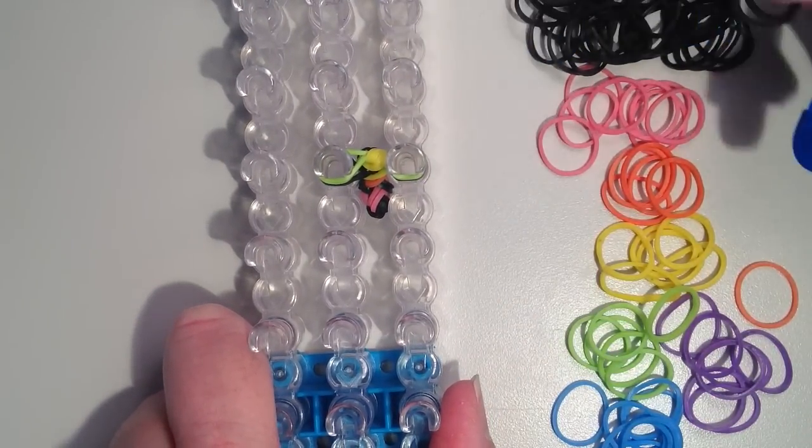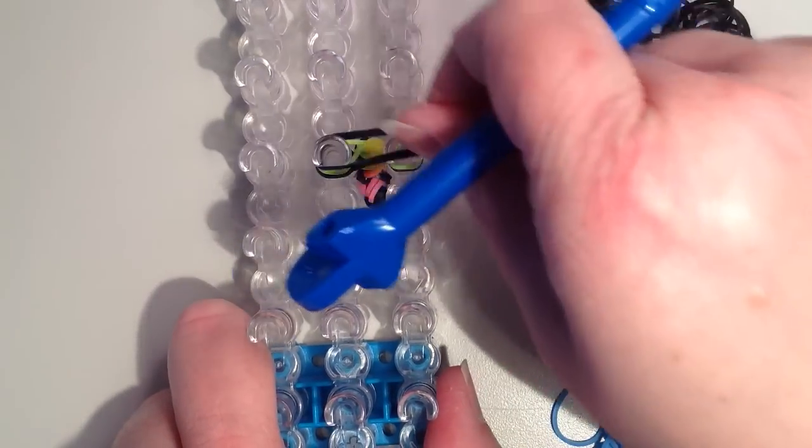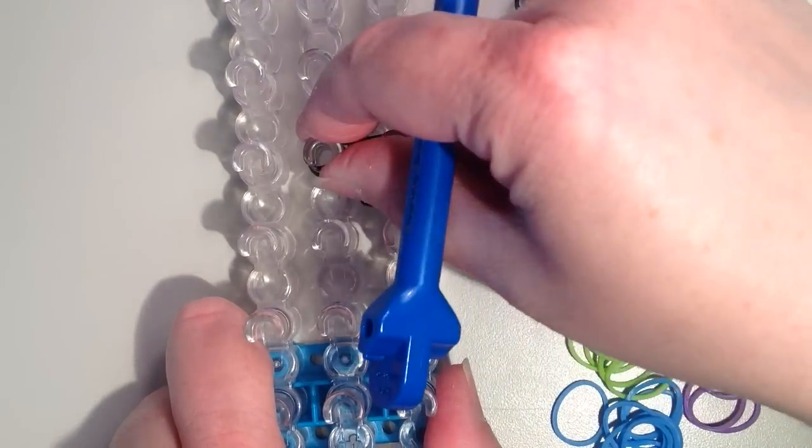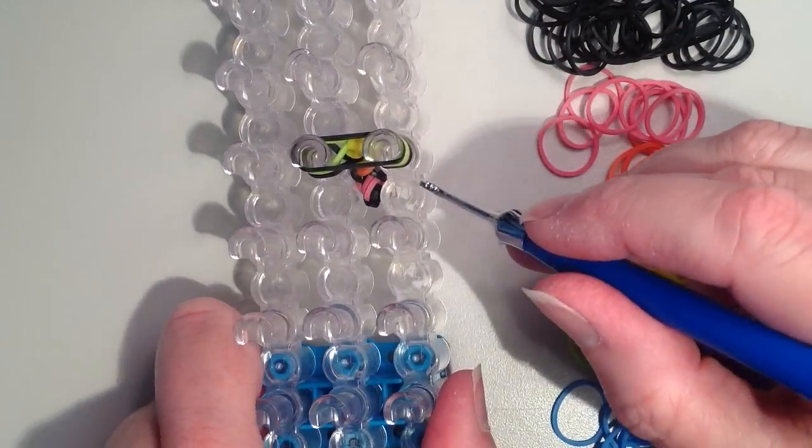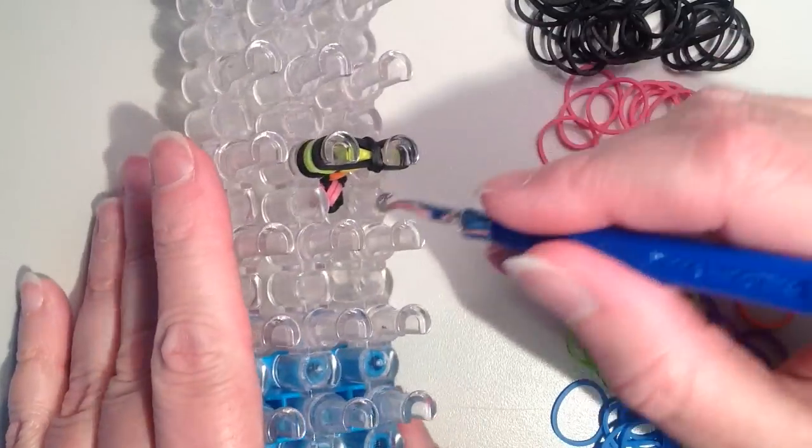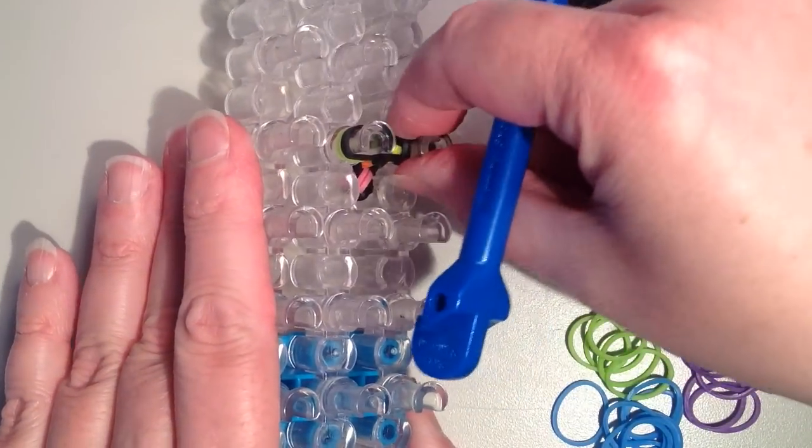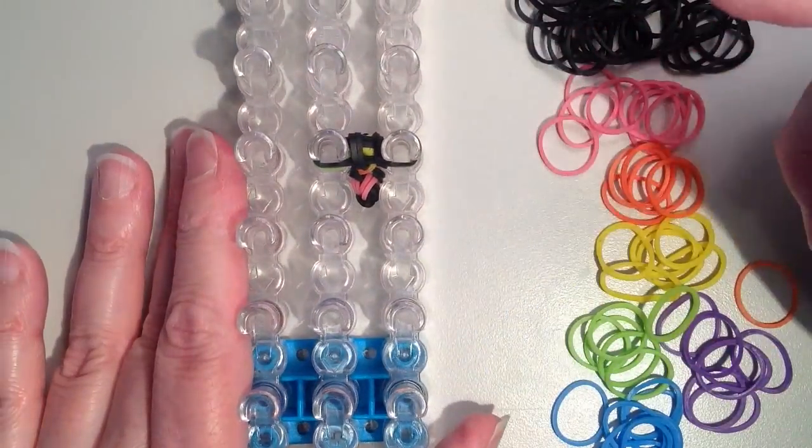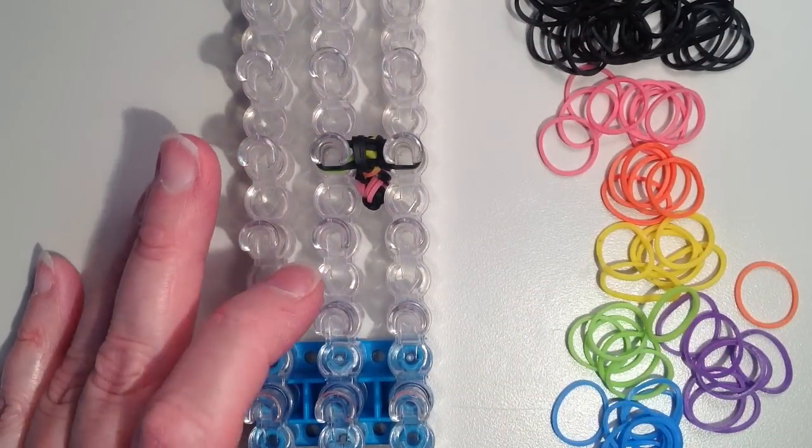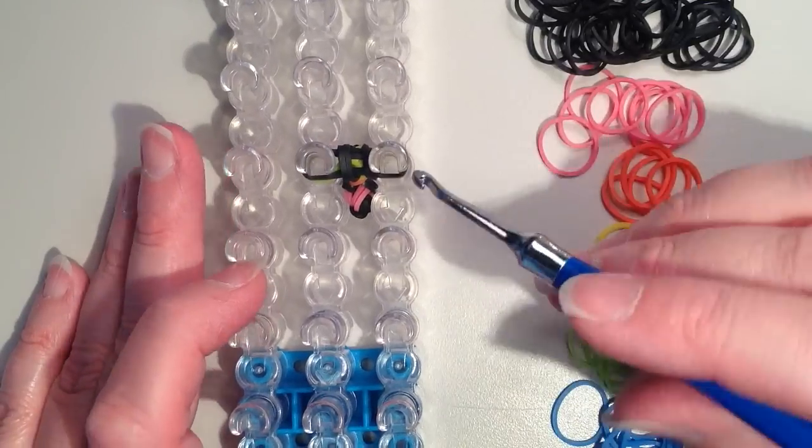So hopefully you're seeing the pattern and you're getting the hang of it. I think the hardest part really is remembering which way to twist. I can't tell you how many times I messed that up. I'll be sort of mindlessly working on the bracelet and then I'll realize that I twisted something the wrong way and have to backtrack. So now since it's the black layer, we're doing clockwise.